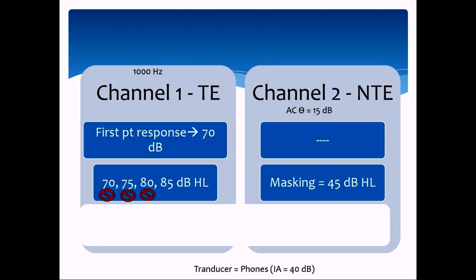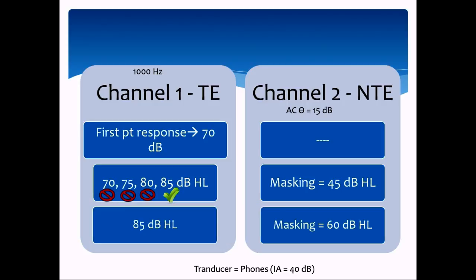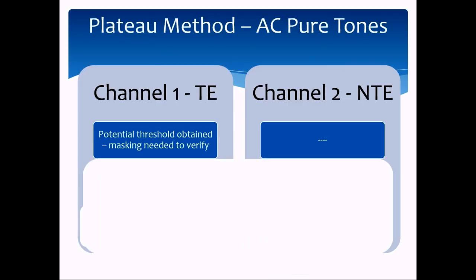In another scenario with the same setup: you apply masking at 45 dB (15 dB threshold plus 30 dB at 1000 Hz). Tone at 70 — no response. Tone at 75 — no response. Tone at 80 — no response. At 85, the patient gives a positive response. Now 85 is 15 dB higher than where you started at 70, so you dump an extra 15 dB of masking in and verify the 85 dB threshold — patient confirms. That's the masked threshold. That's the dump method in a nutshell.